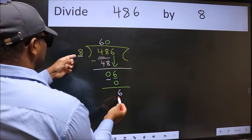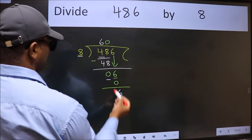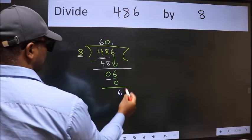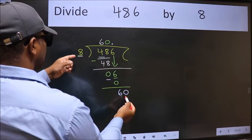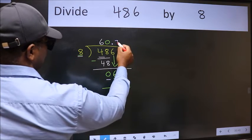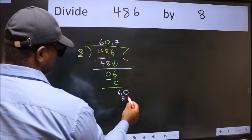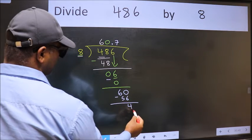And 6 is smaller than 8, so now we can put the decimal and take 0. So 60. A number close to 60 in the 8 table is 8 times 7, which is 56. Now we subtract. We get 4.